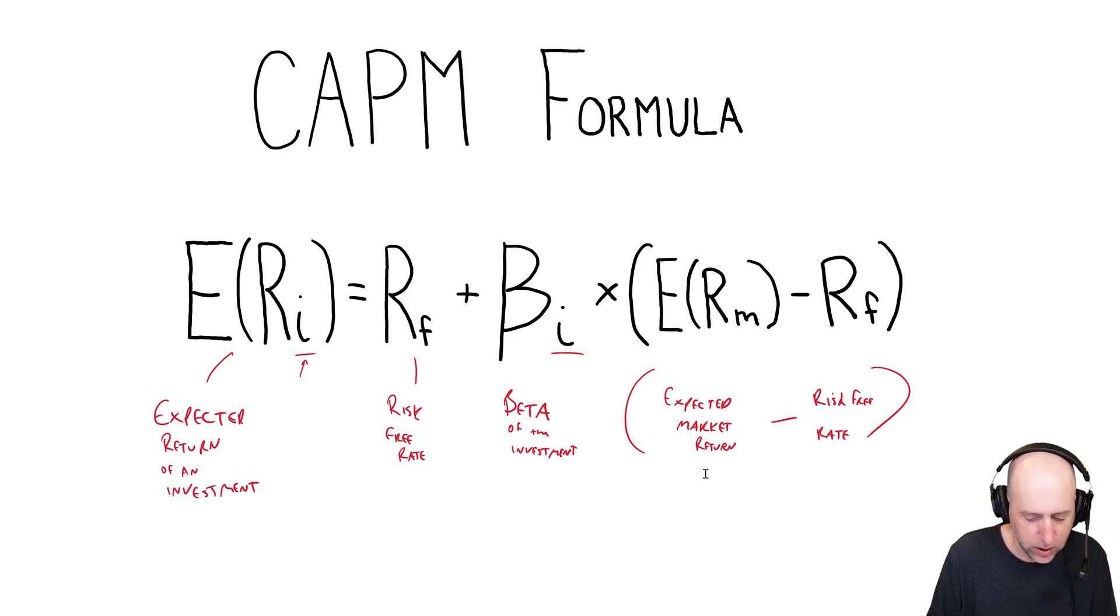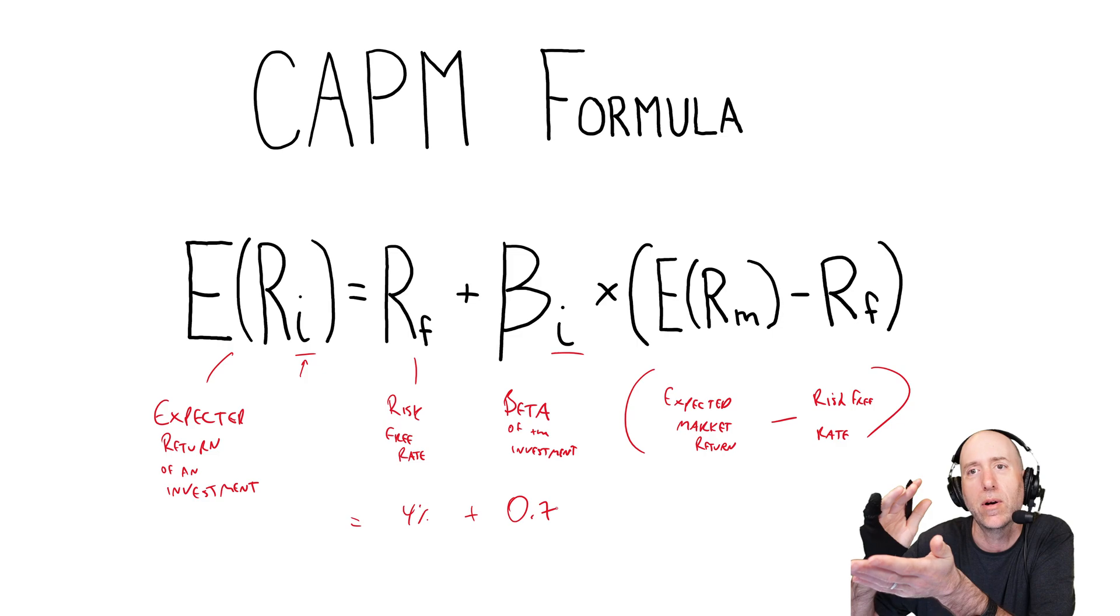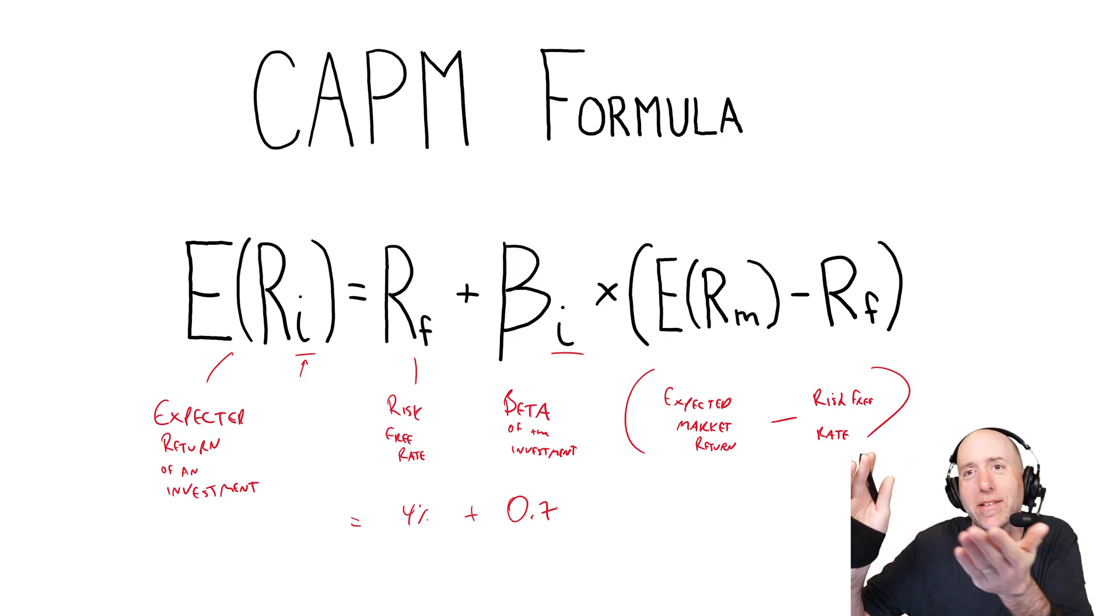So, in my pretend example, let's use Coke as our pretend example. So, let's figure out the expected return of Coke. Let's say the risk-free rate is 4%. Coke's beta is low. Let's just say it's, again, I'm making up numbers, but let's say it's 0.7. And that can be measured. You can look at the historical performance of the company and say, well, when the stock market went up one day to the next went up by 2%, Coke only went up by 1%, say.